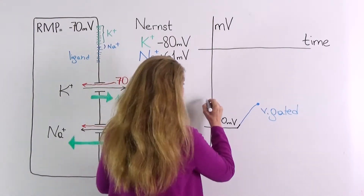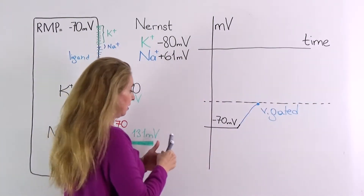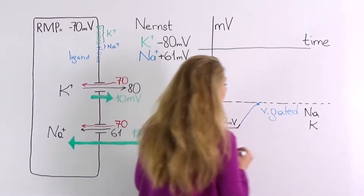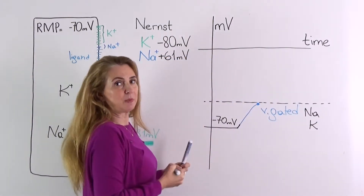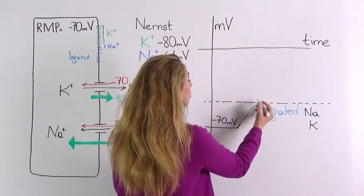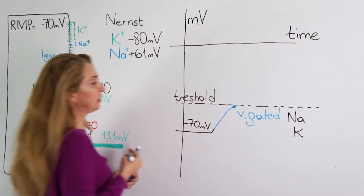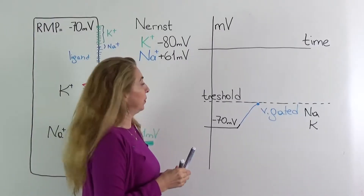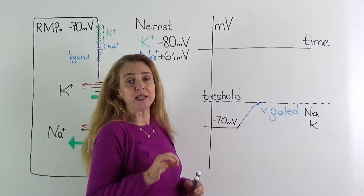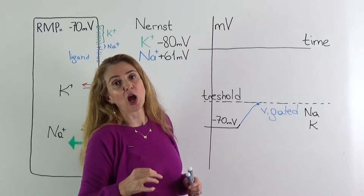This point at which the voltage-gated channels open — they are either voltage-gated sodium or voltage-gated potassium channels. Let's have a look at the action potential in general. Whenever the threshold level is reached, voltage-gated sodium and potassium channels open. The threshold can be defined as the membrane potential level at which voltage-gated channels open.